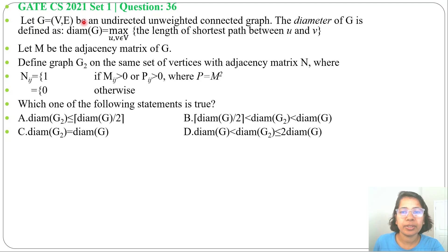Hi, here's one previous question of algorithm. This question was asked in GATE CS 2021 Set 1, question number 36. Let G equals VE be an undirected, unweighted, connected graph.